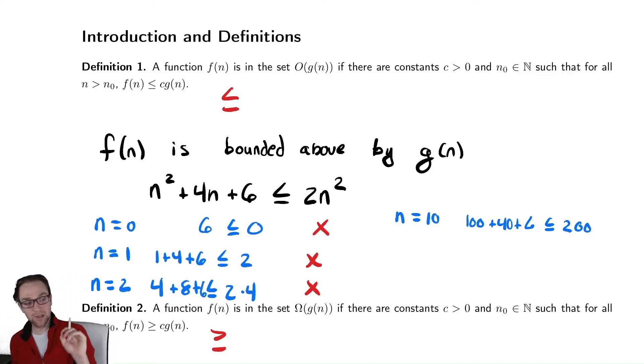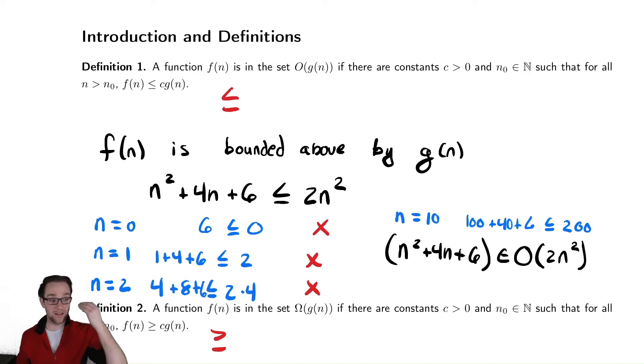So, n² + 4n + 6 is, in some sense, bounded above by 2n². We would write that down in the following sense: n² + 4n + 6 is in the set big O of 2n². So, that says that it is a slower growth rate, or the same growth rate, as 2n². In practice, that 2 also isn't very important, though, because the important thing is that the dominant term is n². So, we aren't going to keep that 2 there. We're going to allow that to exist in our definition.